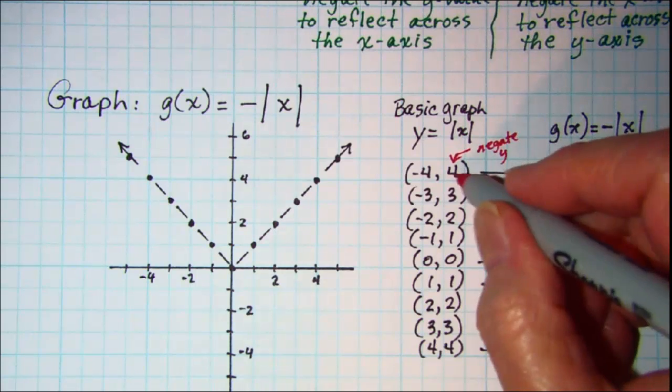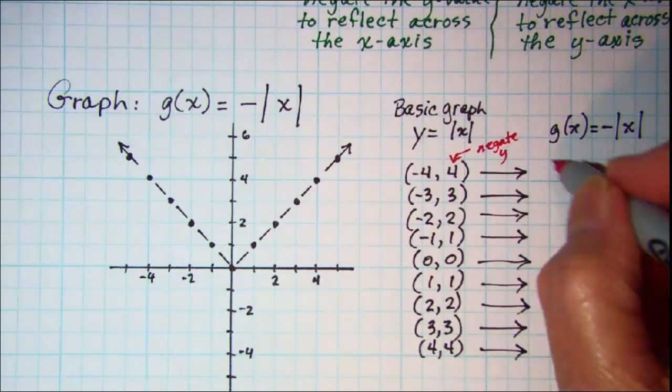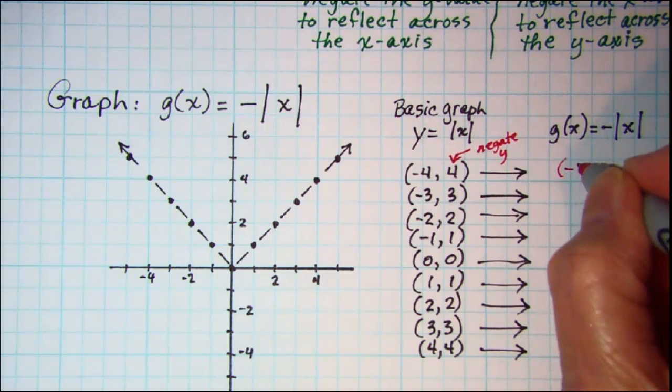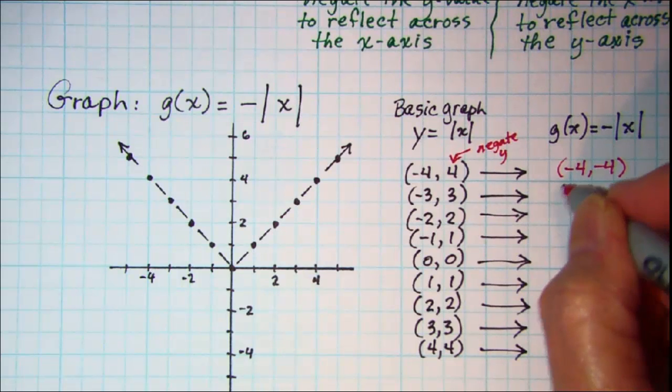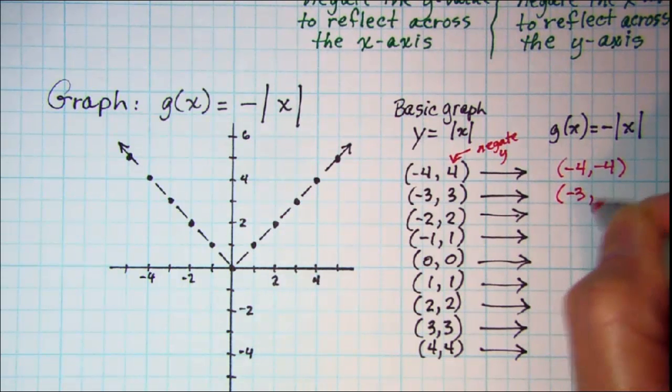So our point corresponding to negative 4, 4 on the basic graph is going to be negative 4, negative 4. Go ahead and do these real quick. Negative 3, negative 3.